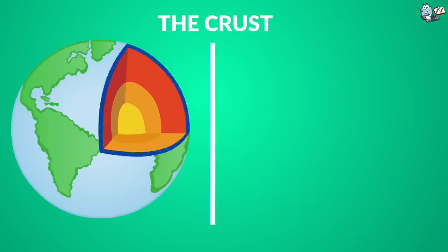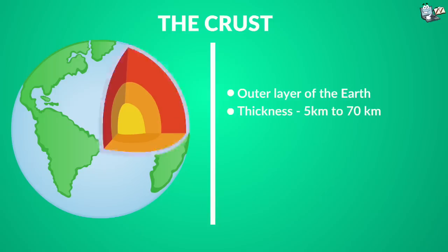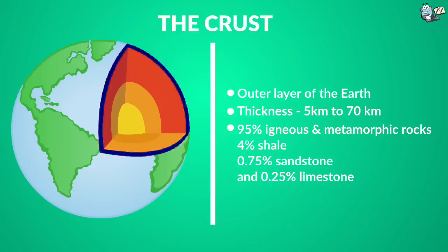The crust is the thin outer layer of our Earth. It varies from about 5 kilometers thick in the ocean floor to around 70 kilometers thick on land.